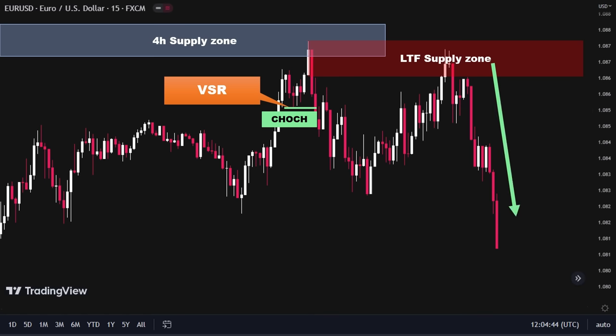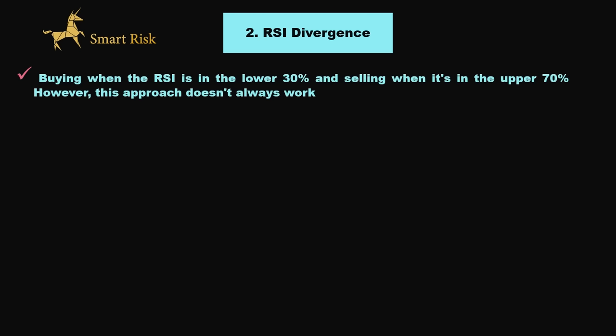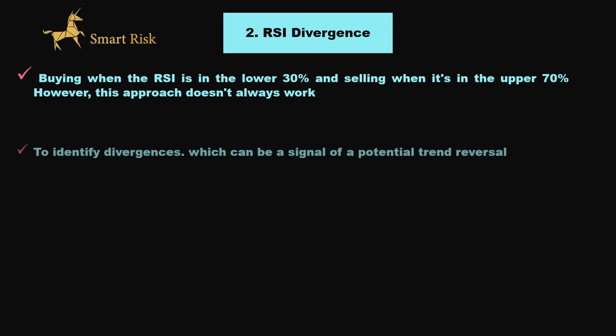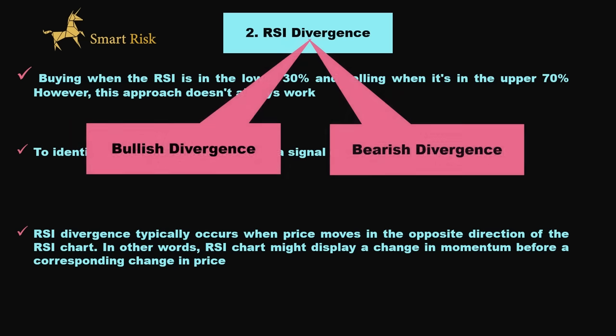Let's move on to discussing the second method for confirming a trade entry, which is known as RSI divergence. When people hear about RSI, they often associate it with the retail trading strategy of buying when the RSI is in the lower 30% and selling when it's in the upper 70%. However, this approach doesn't always work. Instead, I use RSI to identify divergences, which can be a signal of a potential trend reversal. RSI divergence typically occurs when price moves in the opposite direction of the RSI chart — in other words, the RSI chart might display a change in momentum before a corresponding change in price. There are two types of RSI divergence: bearish and bullish divergence.